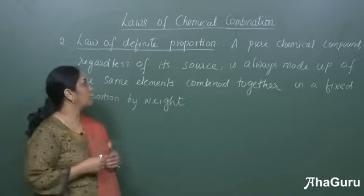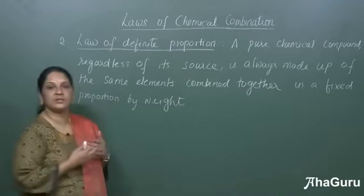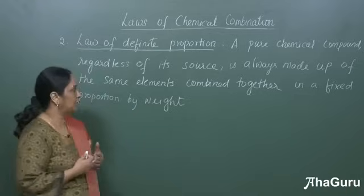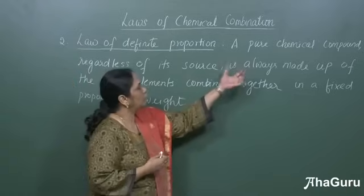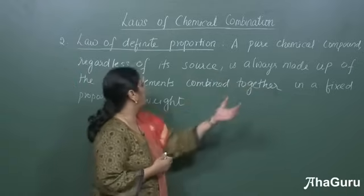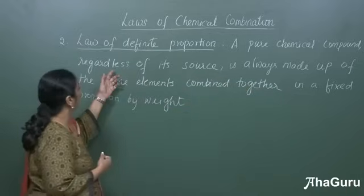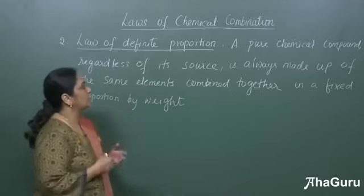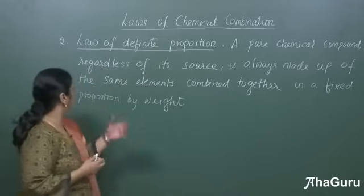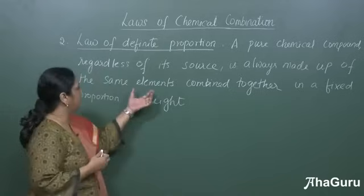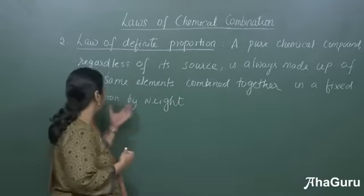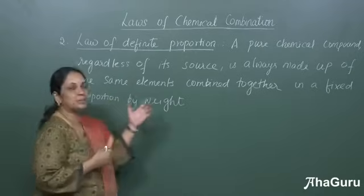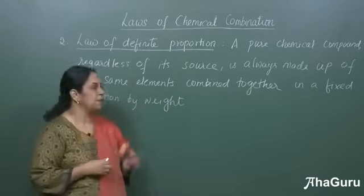The next law is the law of definite proportion, also called the law of constant proportion. This states that a pure chemical compound, regardless of its source, is always made up of the same elements combined together in a fixed proportion by weight.